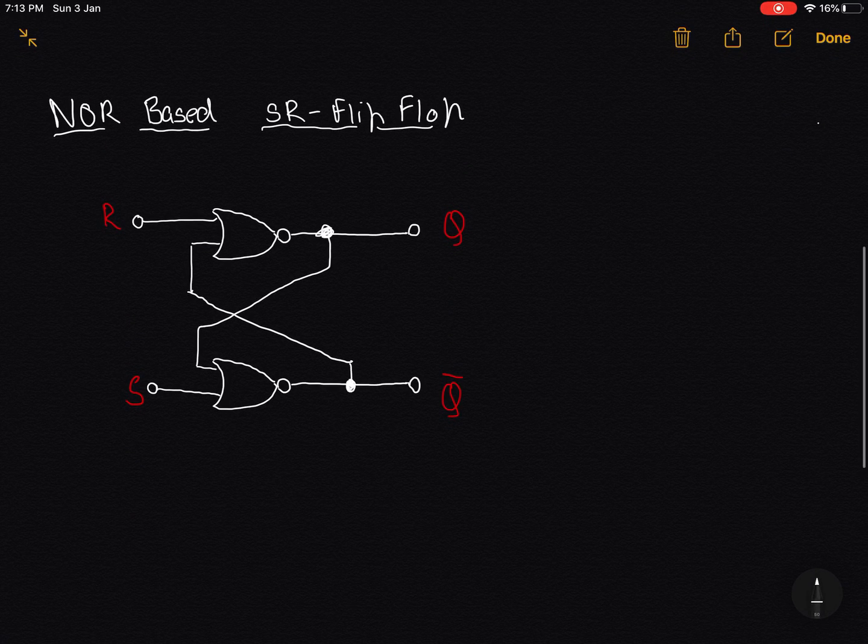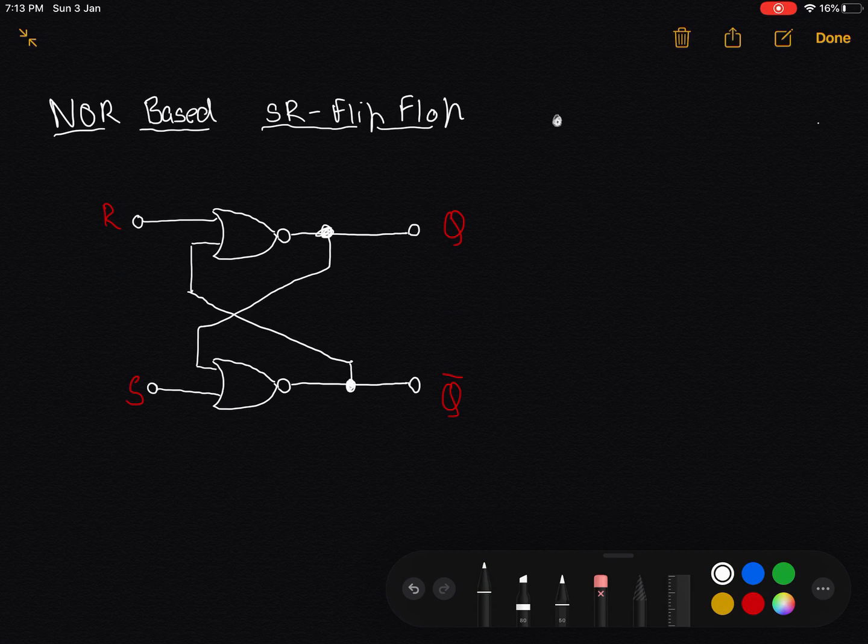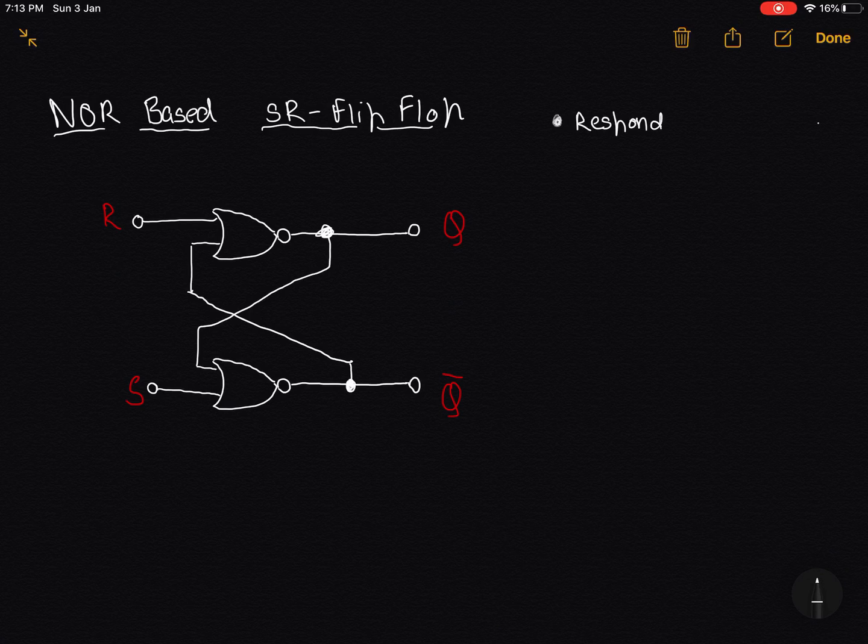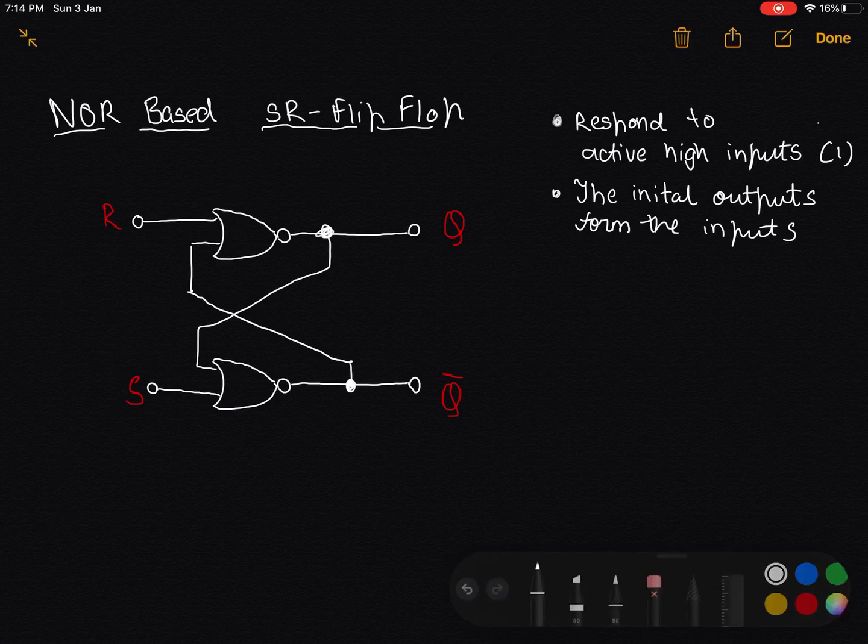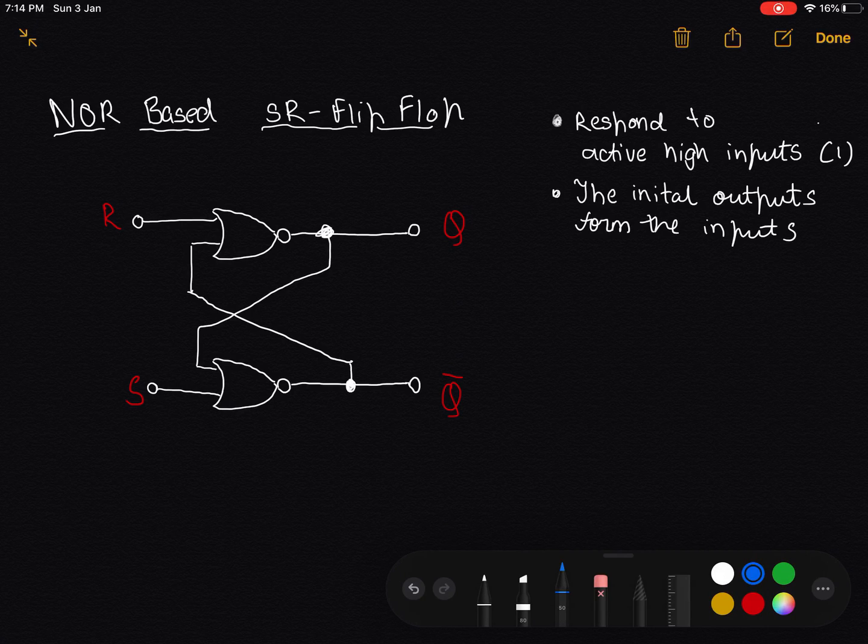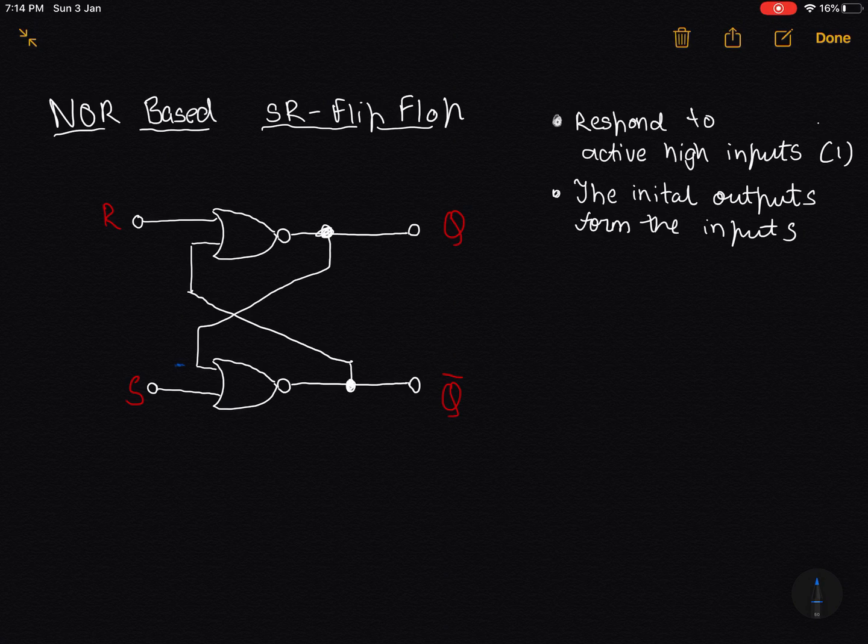SR-based flip-flops respond to active high inputs, which means basically 1. They respond to 1s. The initial outputs from the inputs. This happens because these are intertwined. The output over here forms the input back over here. That is why the initial output gives you the input.